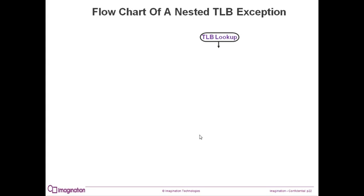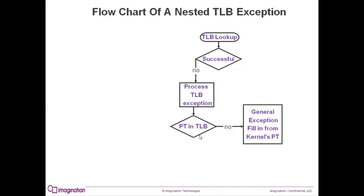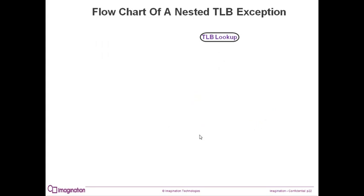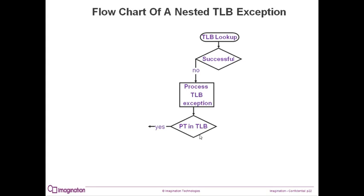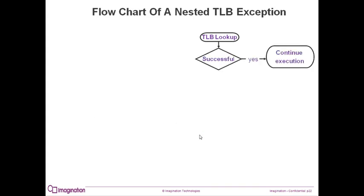Let's go through a flowchart of nested TLB miss exception handling. First, the CPU tries to do a TLB lookup, and it checks to see if it was successful. There is a TLB miss, so the processor generates a TLB exception. The exception handler tries to look up the entry in the process's page table, and we get another TLB miss. This time, we start executing from the general exception handler. This handler will fill in the process's page table miss from the OS page table. The CPU returns back to user mode. The lookup is tried again and fails. Another TLB exception is generated, but this time the entry is found in the process's page table. The TLB is filled in from the process's page table entry and returns back to user mode. The TLB lookup happens again, and this time it was successful.